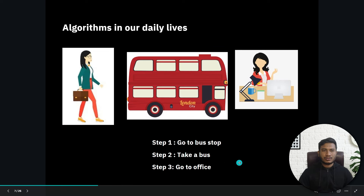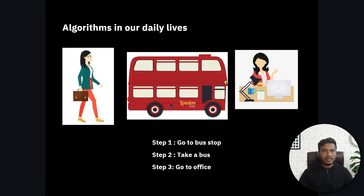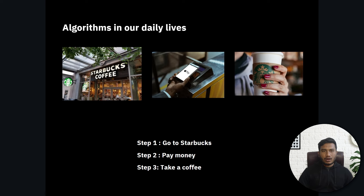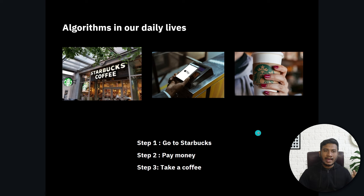We follow algorithms in our daily lives all the time. If you want to go to the office, you go to the bus stop, take a bus, go to the office, and repeat that every day — that's an algorithm. Similarly, if you want to buy coffee from Starbucks: go to Starbucks, pay the money, take the coffee, and repeat the next day. Everywhere in day-to-day life we are following algorithms, just as we are always dealing with data structures.